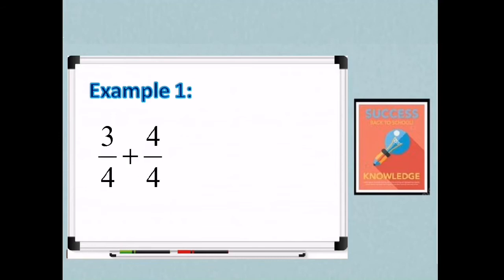So let's start with example 1. 3 fourths plus 4 fourths. So ang ating denominator ay 4. We just copy it and then just add the numerator. 3 plus 4 is 7. So our answer is 7 fourths.